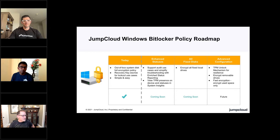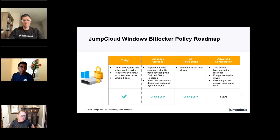Another exciting area is enhancements to our BitLocker policies. FDE for Mac and Windows are perhaps two of the most popular policies at JumpCloud. Last quarter we announced broader support on Windows for different domain join types — the JumpCloud agent now handles both Azure AD and AD join, supporting telemetry, commands, software management, and policies. You can basically run any device with JumpCloud from a domain join type perspective and still apply management policies.